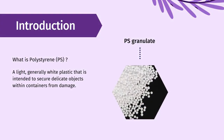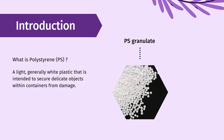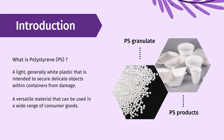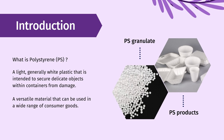What is polystyrene? Polystyrene is a light, generally white plastic that is intended to secure delicate objects within containers from damage or to prevent objects from loss of heat. It is commonly used in products that require clarity, such as food packaging and laboratory ware, because it is strong, solid plastic.